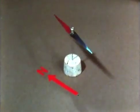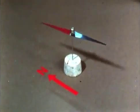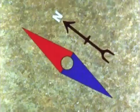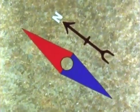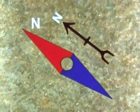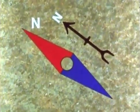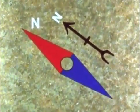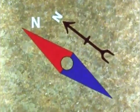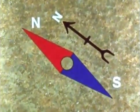A magnetic compass needle always points the same end to the north. We call that end the north-seeking pole, or just the north pole of the magnet. The other end is, of course, the south-seeking pole, or south pole of the magnet.